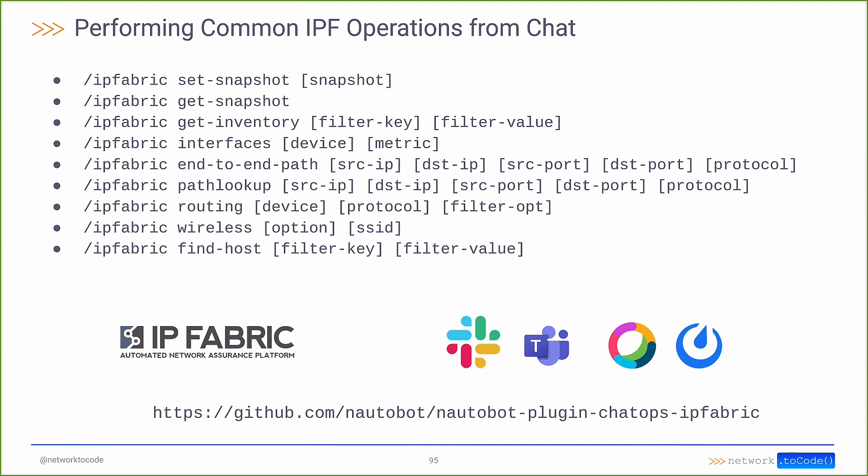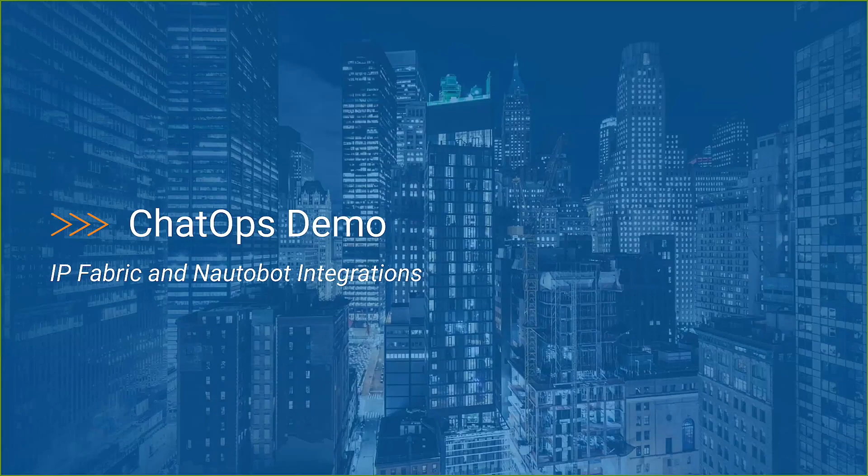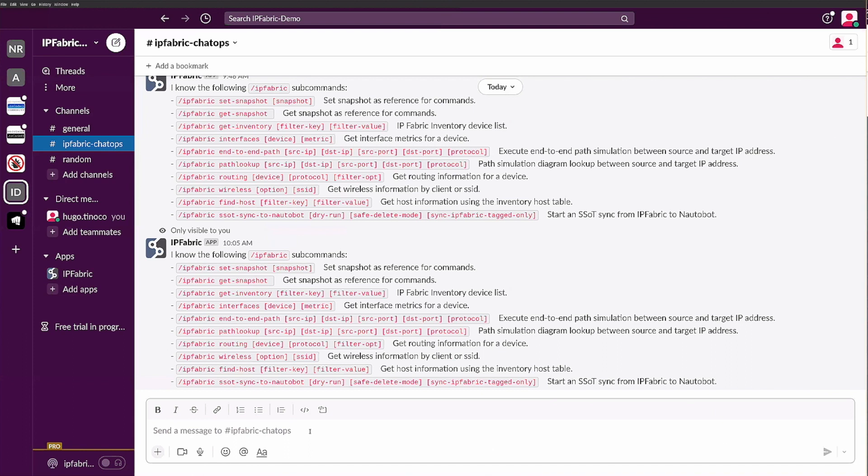Here are some of the common operations a user of IP Fabric would perform in the UI: getting snapshot information, inventory, interfaces, path lookup, routing, wireless, and host information. Our ChatOps application for NautoBot with IP Fabric is open source — you can see the GitHub repo URL at the bottom. So let's get right to the demo.